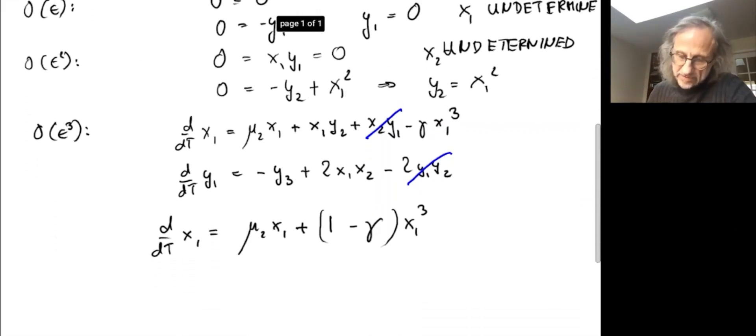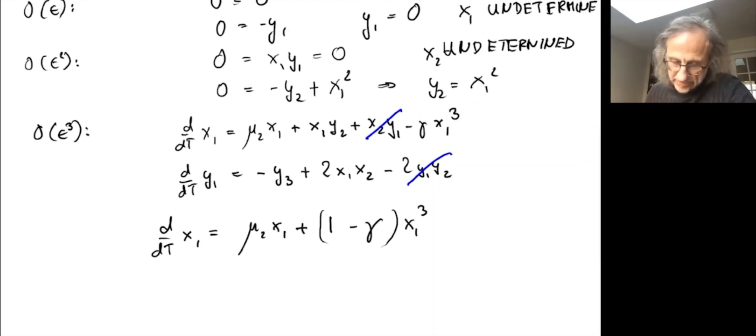We also get an equation for y₃ which we can write down if we feel like it. Actually I won't because we're not so interested in that. Maybe we should first think about what the equation for y₂ even means. We have two results: the dynamics of x₁, and the relationship between y₂ and x₁.